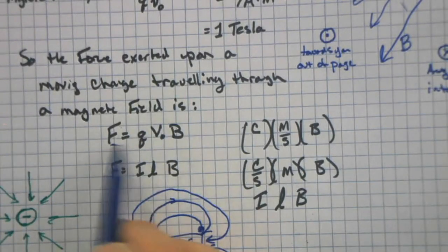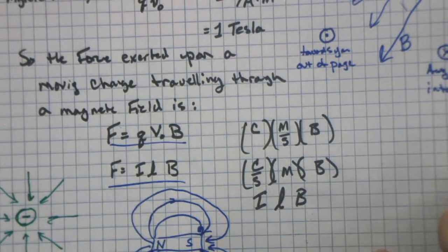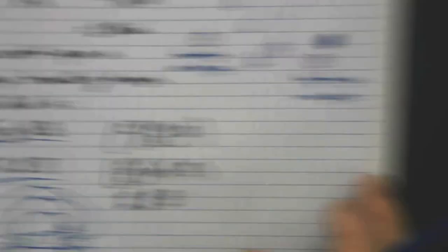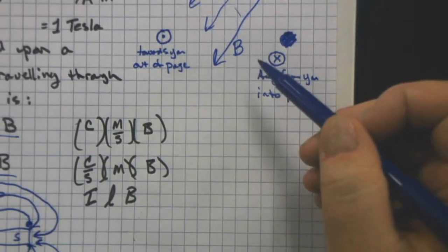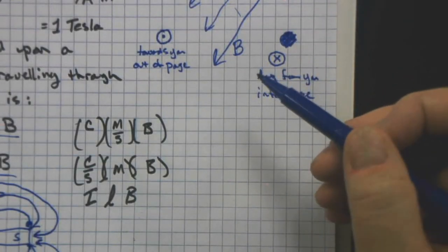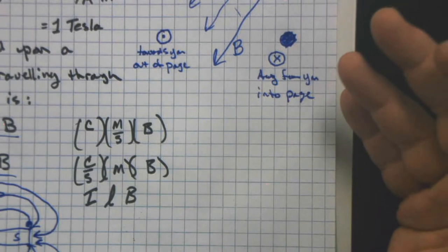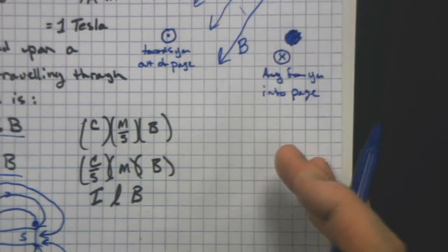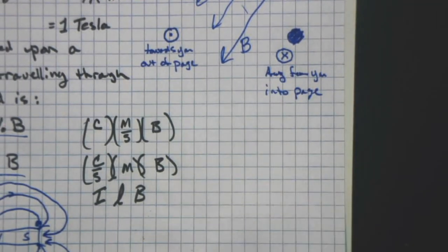So we have the magnitude of the force that we'll find of a charge that's traveling through a magnetic field. And we have the direction it's going to travel. So all of a sudden, we have a force vector. We have a magnitude and a direction of a force acting on an electric charge.